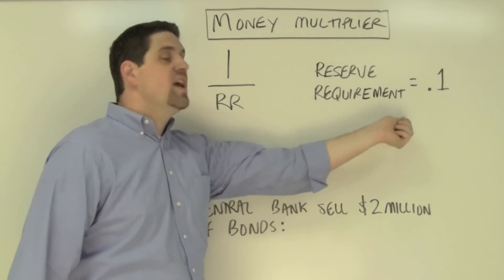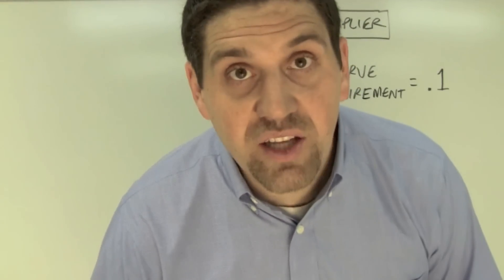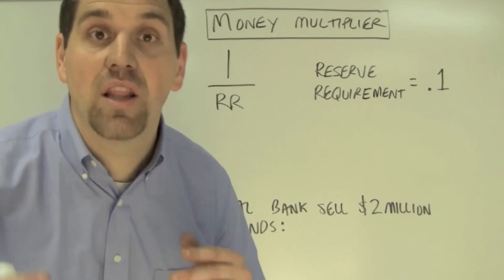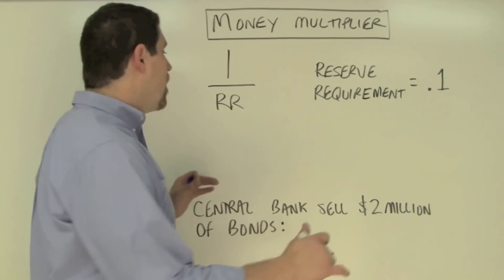This question told you that the reserve requirement is 0.1. That means banks in this country have to hold 10% in reserves and not loan it out. This question also tells you that these banks loan out all the other 90%.